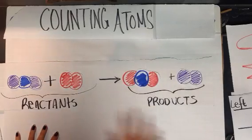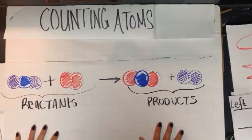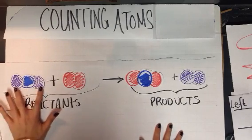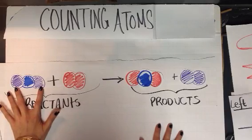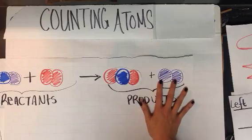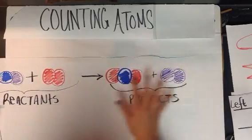And so when we want to count the atoms, they need to be conserved. Remember learning about the law of conservation of matter? Nothing should be created or destroyed. Meaning, if I have two purple atoms on this side, somewhere in my products I should have two purple atoms. And I do. It doesn't matter where they are or how they're paired up.